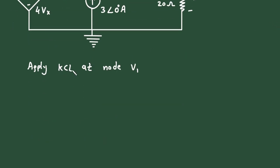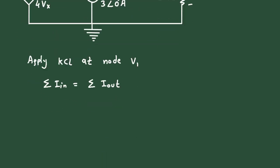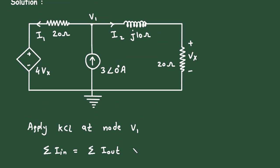According to Kirchhoff's current law, the summation of all currents entering a node is equal to the summation of all currents leaving the node. Here at this node, the entering current is 3∠0° ampere. The leaving currents from this node are I1 and I2.